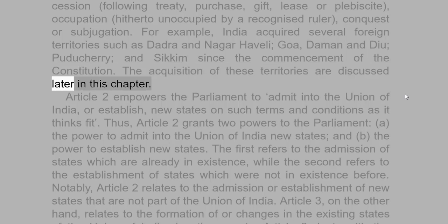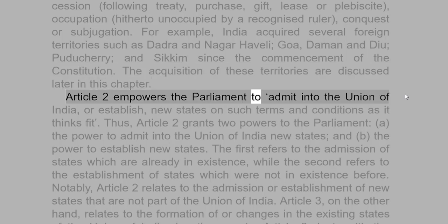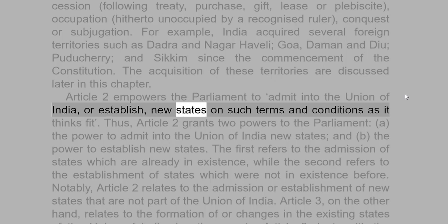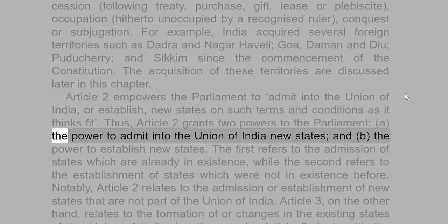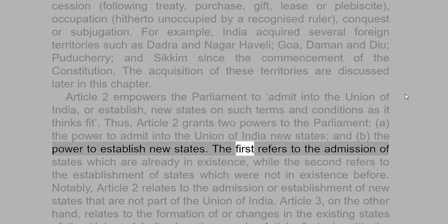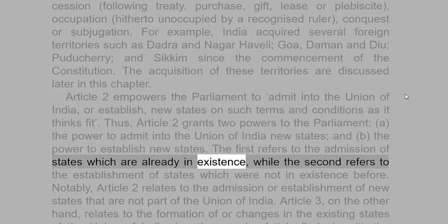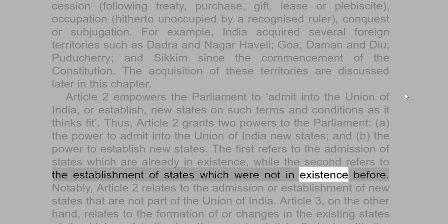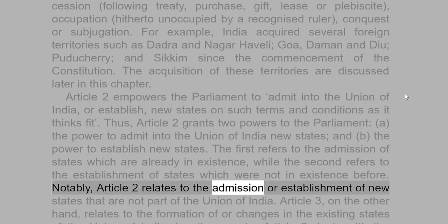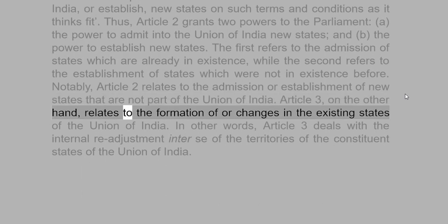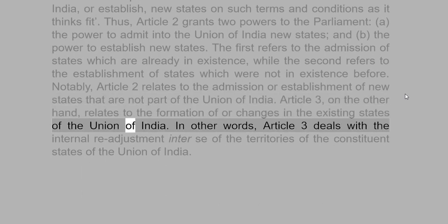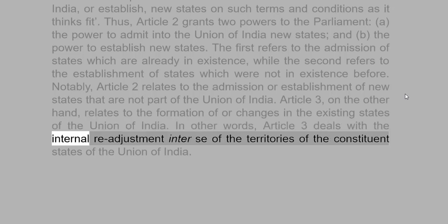Article 2 empowers the Parliament to admit into the Union of India, or establish, new states on such terms and conditions as it thinks fit. Thus, Article 2 grants two powers to the Parliament: (a) the power to admit into the Union of India new states, and (b) the power to establish new states. The first refers to the admission of states which are already in existence, while the second refers to the establishment of states which were not in existence before. Article 2 relates to the admission or establishment of new states that are not part of the Union of India, whereas Article 3 relates to the formation of or changes in the existing states of the Union of India.